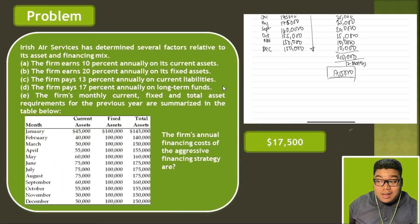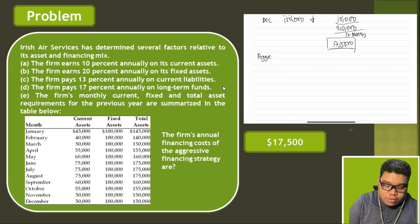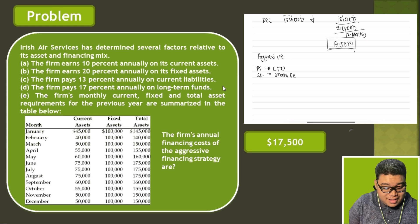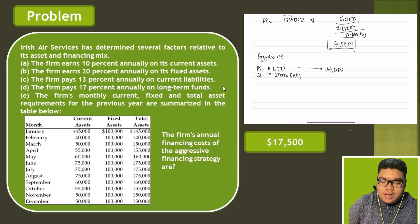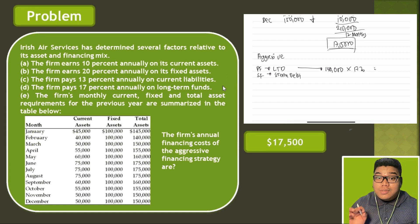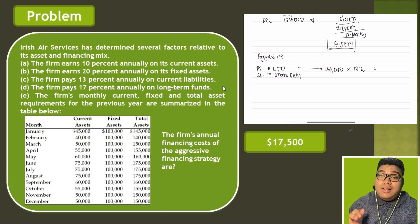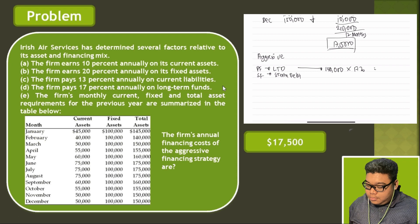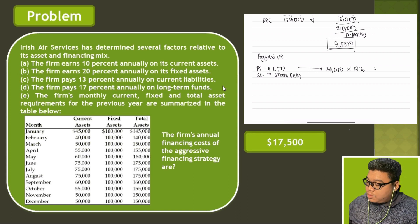What is the annual financing cost if we use an aggressive financing strategy? Under aggressive strategy, we have permanent funding with long-term debt while seasonal funding uses short-term debt. The advantage of using an aggressive funding strategy is lower interest costs, because currently maturing obligations have lower interest costs than long-term obligations. For permanent funding, that is 140,000 multiplied by 17%, giving us 23,800.